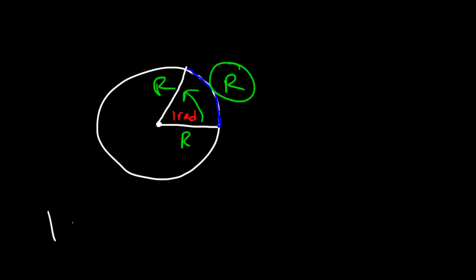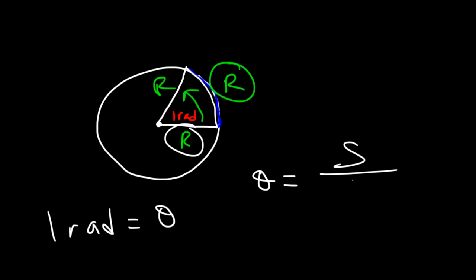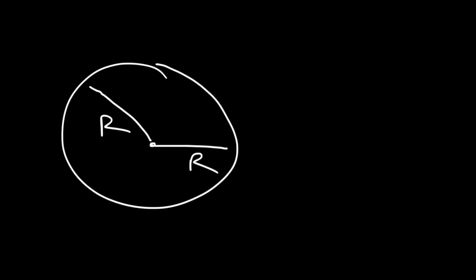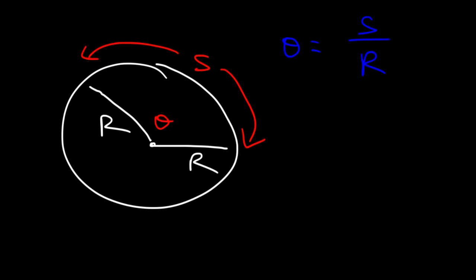A radian is the angle that occurs whenever the arc length is equal to the radius. If you want to find the angle theta, you can divide the arc length — known as s — by the radius, and that will give you the angle in radians. So theta equals s divided by r.